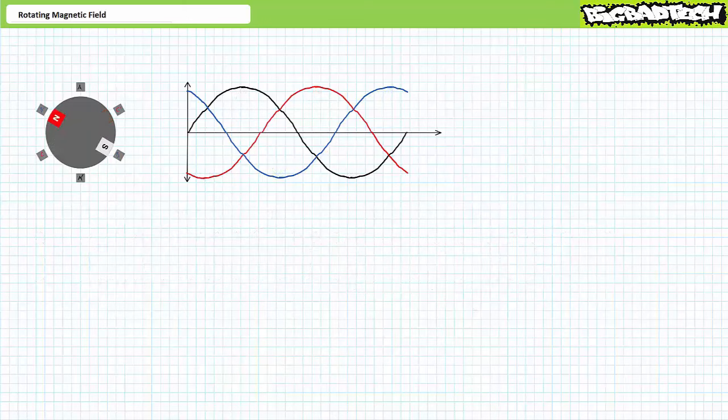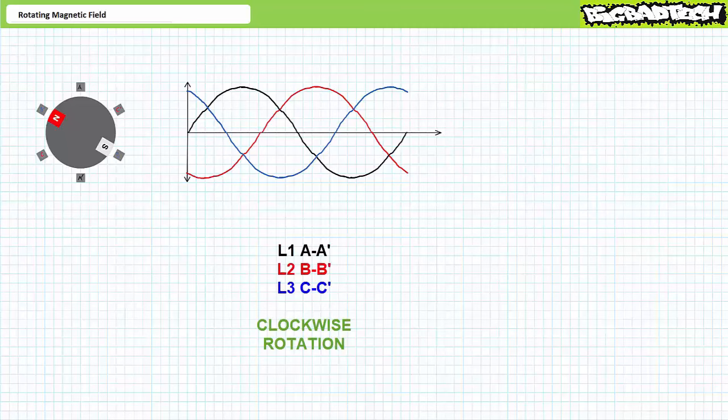Let's now examine how phase sequence determines rotational direction. With L1 connected to A, L2 to B, and L3 to C, the rotating magnetic field revolves clockwise. Three-phase AC makes it supremely easy to change rotational direction by swapping any two phases. Allow me to demonstrate.